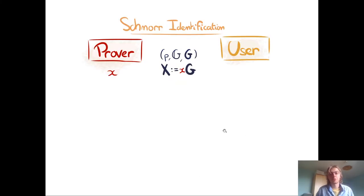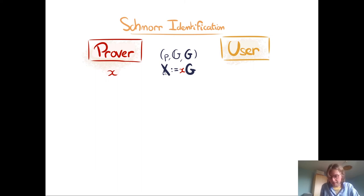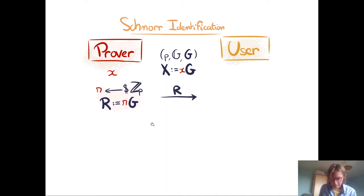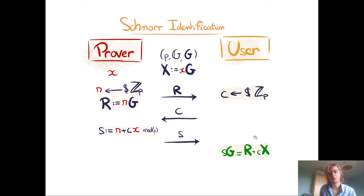Let's introduce Schnorr signatures, starting with Schnorr identification. In this protocol you have a prover and a user, working in a group G of order P with capital G as generator. The prover has a secret x and wants to prove knowledge of it to the user. Capital X is the public key computed from the secret. The prover picks a random R and sends it to the user; the user picks a random challenge C and sends it to the prover; the prover builds answer S and sends it to the user. The user then verifies the prover knows x using the verification equation.